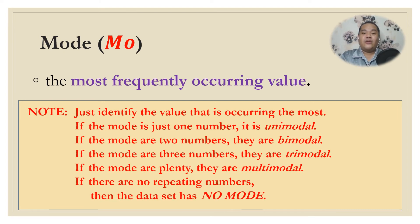The third measure of central tendency is the mode. The mode is the most frequently occurring value — simply identify the value that occurs most often. If there is one mode, the data is unimodal; two modes, bimodal; three modes, trimodal; and many modes, multimodal. If there are no repeating numbers, the data set has no mode — note that the answer is not 0, because 0 is still a score.